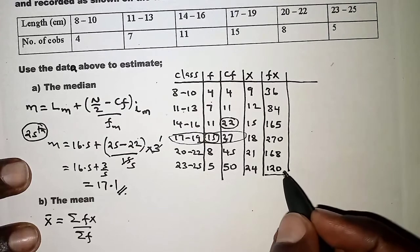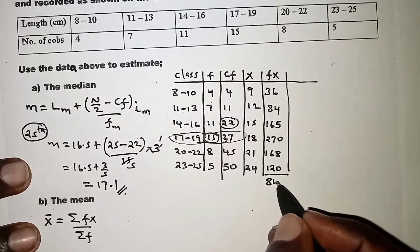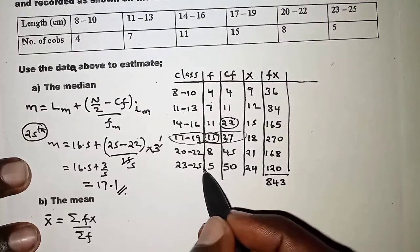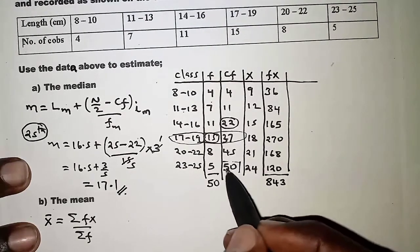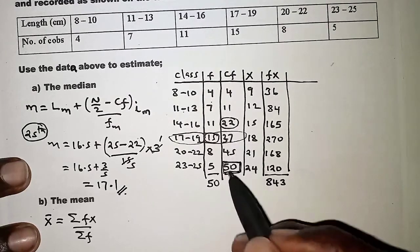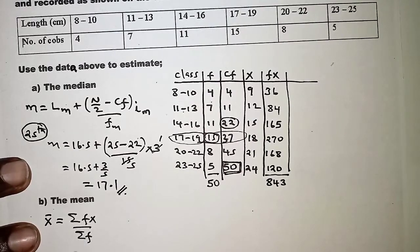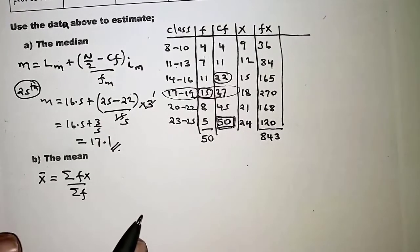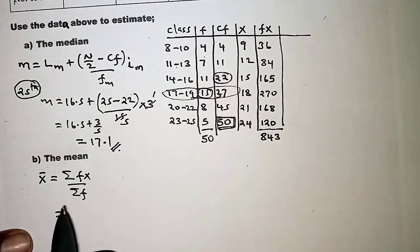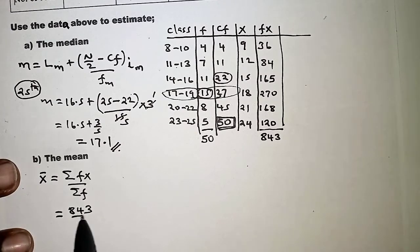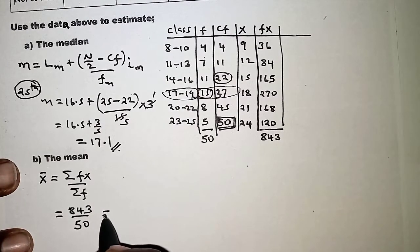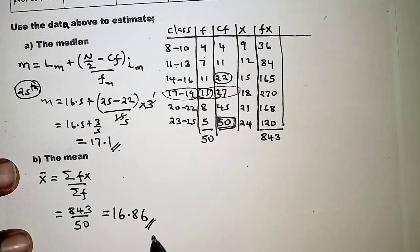Adding all the fx values gives Σfx = 843. The sum of frequencies Σf = 50, which matches the last cumulative frequency value. Substituting into the formula: mean = 843 / 50 = 16.86. That is the mean.